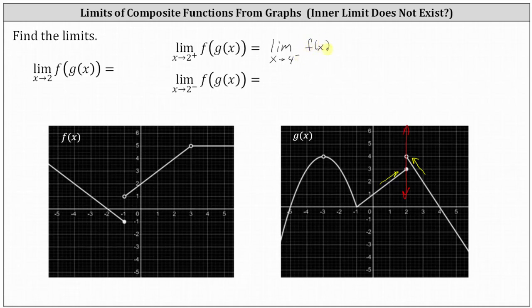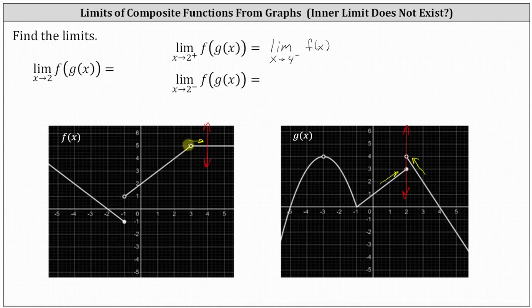The reason we're talking about y values for g of x and x values for f of x is because the y values or outputs of g of x become the inputs of f of x for the composite function f of g of x. Now let's determine the limit as x approaches four from the left or negative side of f of x. We're approaching x equals four, this vertical line here, from the left side, and we can see we're approaching the y value or function value of five.